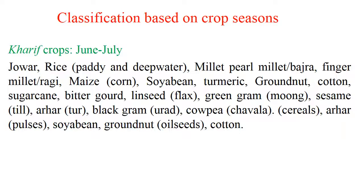Based on the crop seasons, field crops are classified as Kharif, Rabi, and Zaid crops. Kharif crops are mainly grown from June to July — they are sown during this period and harvested at the end of September or October.